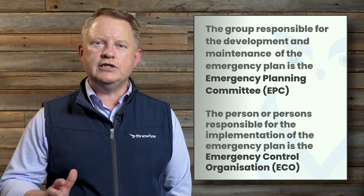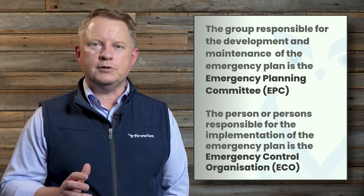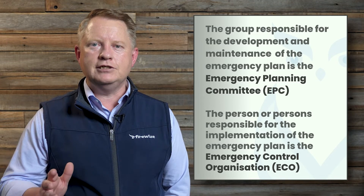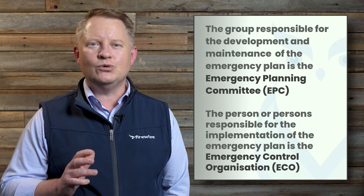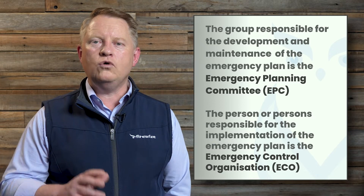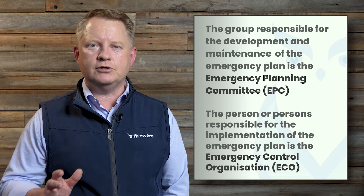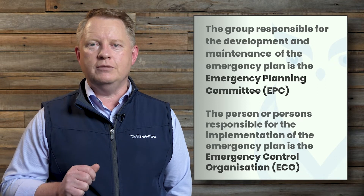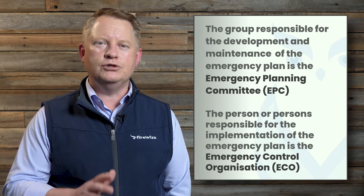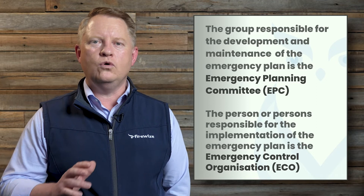An emergency plan incorporates elements that provide for the safety of the occupants of the facility and its visitors leading up to and during an evacuation. In AS3745, the group responsible for the development and maintenance of an emergency plan is called the Emergency Planning Committee or EPC, and the person or persons responsible for the application of the emergency plan is called the Emergency Control Organisation or ECO.